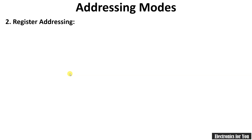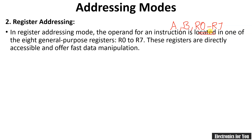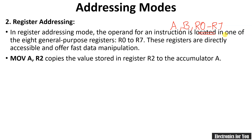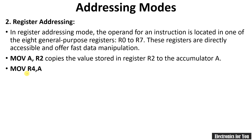The next addressing mode is register addressing mode. As the name indicates, it is related to registers. In 8051 there are a few general purpose registers: A, B, and R0 to R7. If any of these registers are used — if we are transferring data from one register to another — this is known as register addressing mode. The example is MOV A, R2, meaning the content of R2 will be copied into accumulator. Another example is MOV R4, A, where the content of accumulator will be copied into register R4.